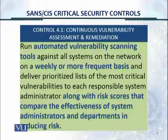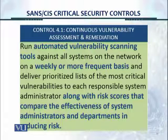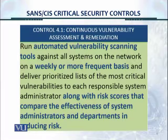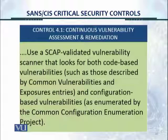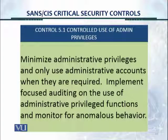Control 4.1: continuous vulnerability assessment and remediation. Run automated vulnerability scanning tools against all systems on the network on a weekly or more frequent basis. Deliver prioritized lists of the most critical vulnerabilities to each responsible system administrator, along with risk scores that compare the effectiveness of system administrators and departments in reducing risk. Use a SCAP-validated vulnerability scanner that looks for code-based vulnerabilities, such as those described by Common Vulnerabilities and Exposures entries, and configuration-based vulnerabilities as enumerated by the Common Configuration Enumeration project. Control 5.1: controlled use of administrative privileges. Minimize administrative privileges and only use administrative accounts when they are required. Implement focused auditing on the use of administrative privilege functions and monitor for anomalous behavior.